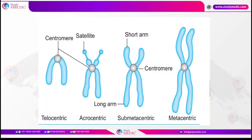In humans, the acrocentric chromosomes are 13, 14, 20, 21, and 22. Telocentric chromosomes are not found in human beings — here the centromere is found at one end of the chromosome. Robertsonian translocation involving the acrocentric chromosomes can lead to monosomy in one cell and trisomy in the other cell, and is one of the reasons for the familial type of Down syndrome, which has a 10% recurrence risk.